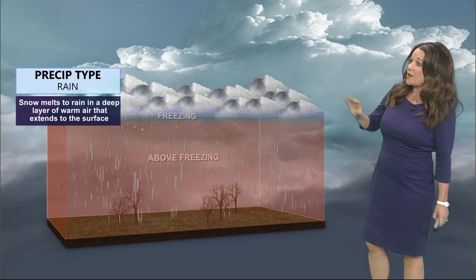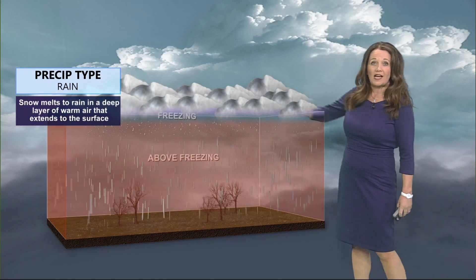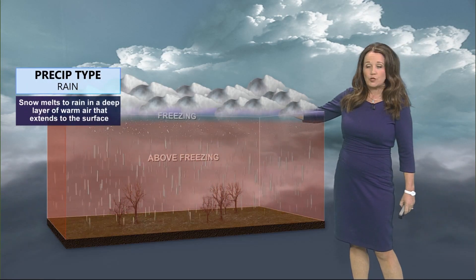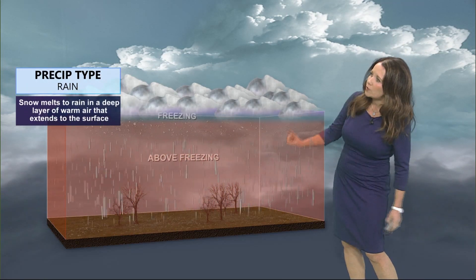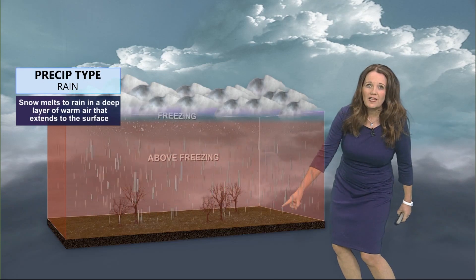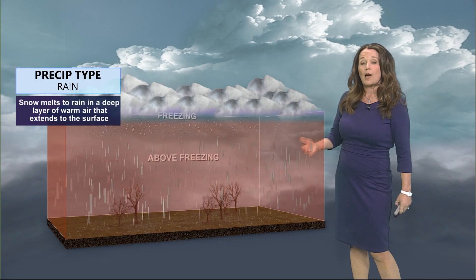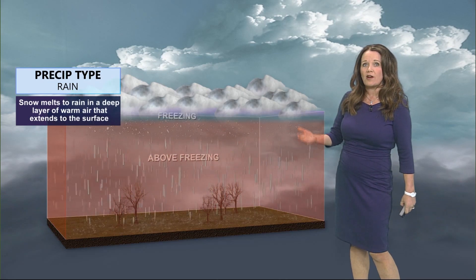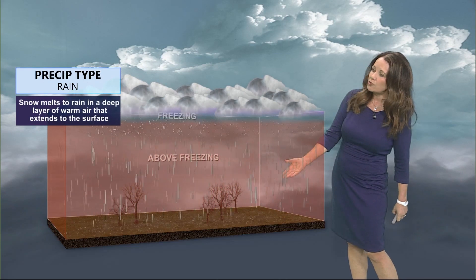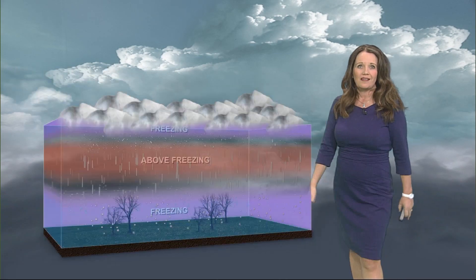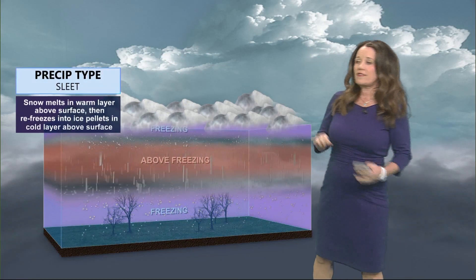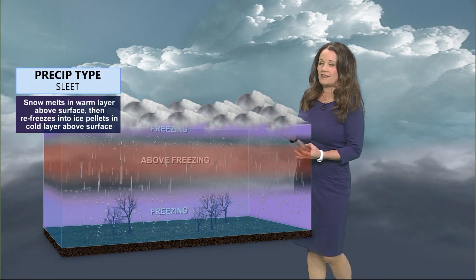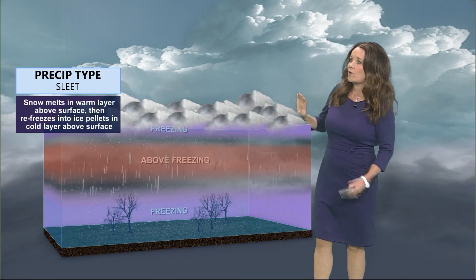With rain, we actually have the clouds aloft producing snow, but it falls into a warm layer that's actually above the freezing mark and it will fall to the surface in a liquid form.